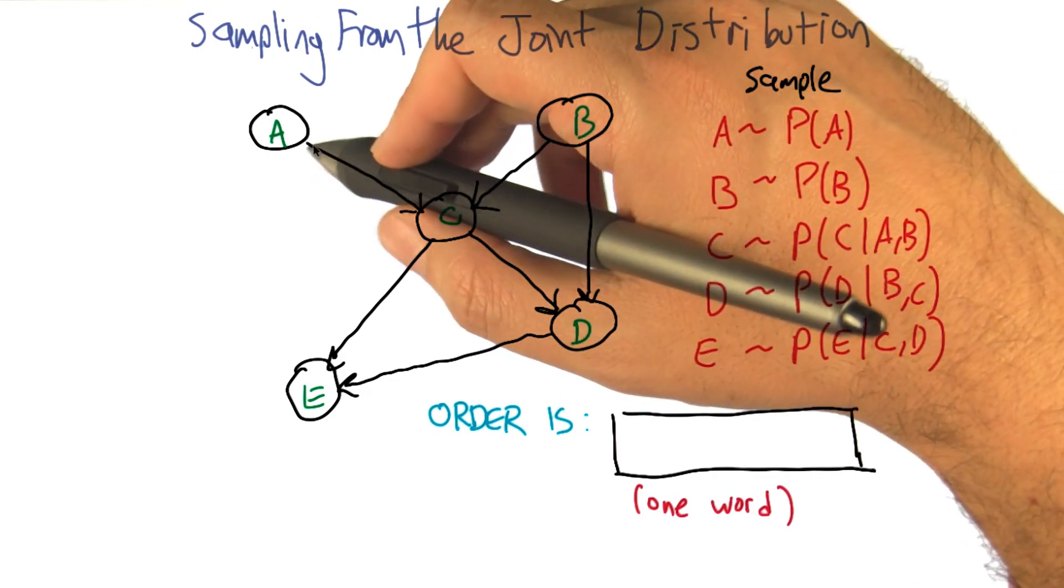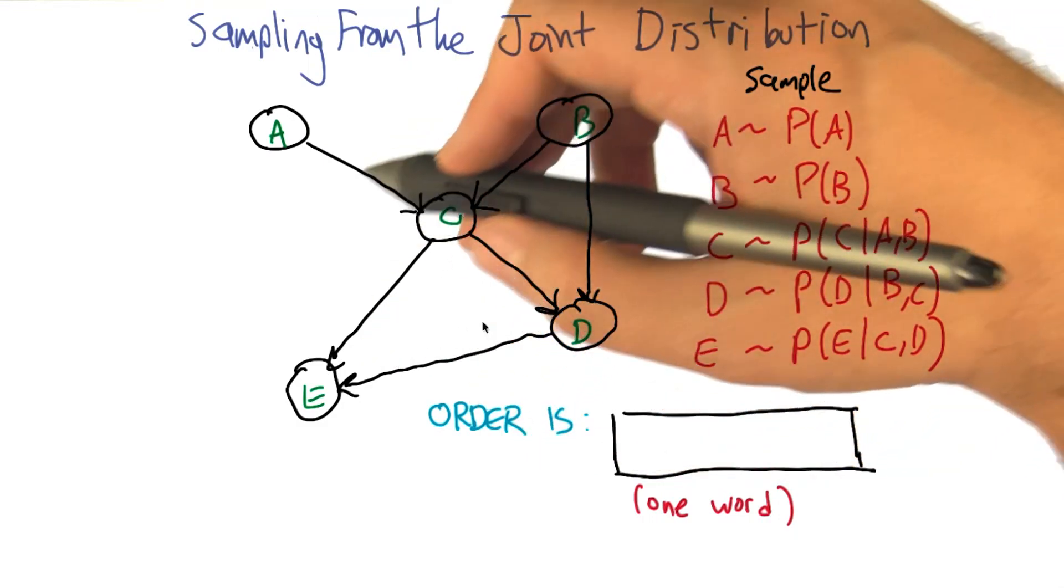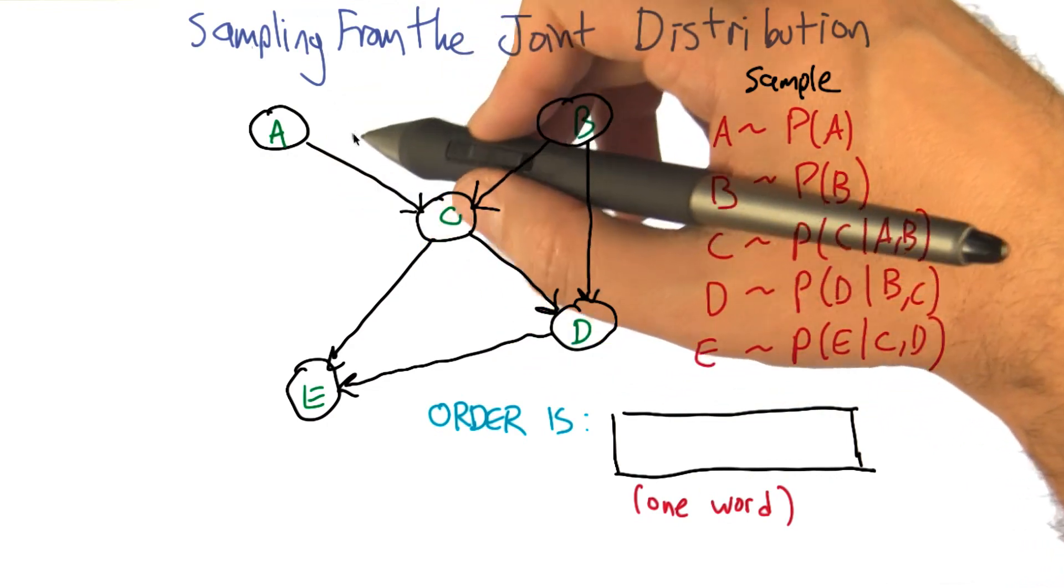So here's an example of a Bayesian network with five variables: A, B, C, D, E. And let's pretend that each one has some set of possible values. It could be true, false, it could be red, green, blue, whatever it happens to be.